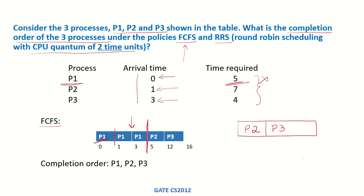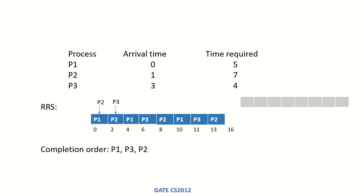After P1 finishes, the ready queue has P2 and P3. Following FCFS, P2 is served first. P2 runs from time 5 to 12 (7 time units), then P3 runs from 12 to 16 (4 time units). The completion order under FCFS follows the arrival order: P1, P2, P3.